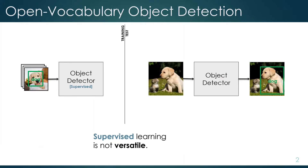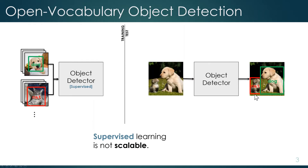The mainstream approach for object detection is to use supervised learning, which basically means if you want a dog classifier, you need to annotate a lot of dog images with bounding boxes, and even then you will only be able to detect dogs and not any other type of object. If you want a more versatile model that can detect cats as well, you need to double your annotation cost and label a lot of cat images, and that doesn't scale well if you want to increase the number of categories.